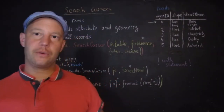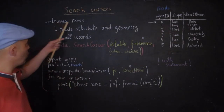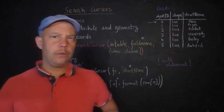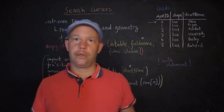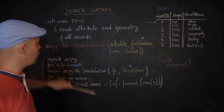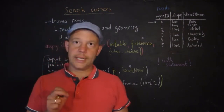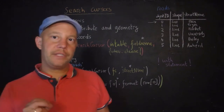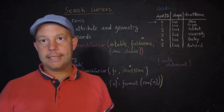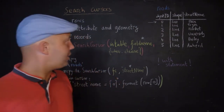The first cursor we want to talk about is the search cursor. It retrieves rows from a table. That table could come from a shapefile, a feature class, or a standalone table. It will read the attributes and the geometry of all the records. It will read the geometry if it's a feature class or shapefile, but not if it's a standalone table with no geographic information.